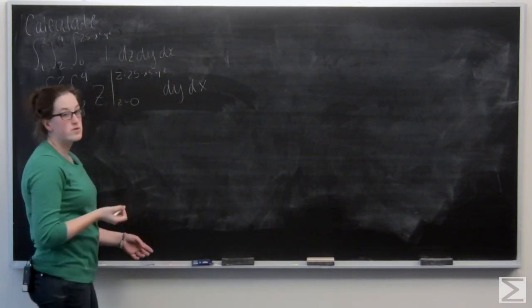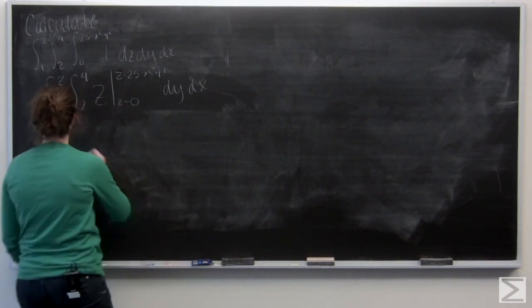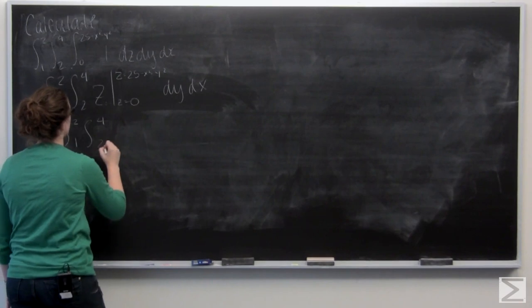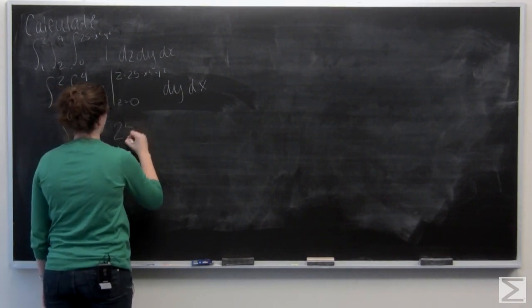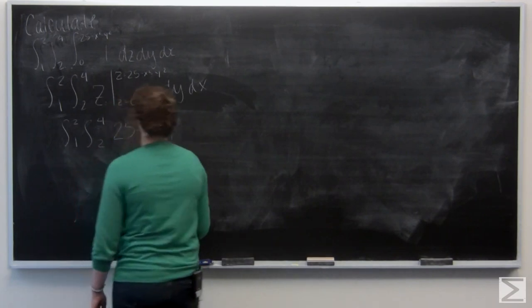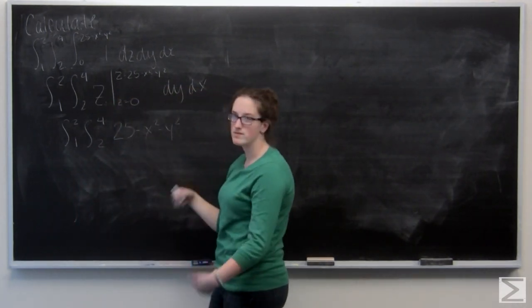First we're going to plug in 25 minus x squared minus y squared. And then for z equals 0, it's just going to be 0.